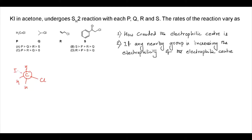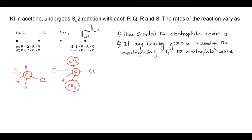Let us go to compound Q. In case of Q, the electrophilic center is quite crowded because of the two nearby CH₃ groups. So we have one hydrogen only. The iodide is going to attack from this side, and due to these two bulky CH₃ groups, the attacking site — the carbon — is quite crowded.